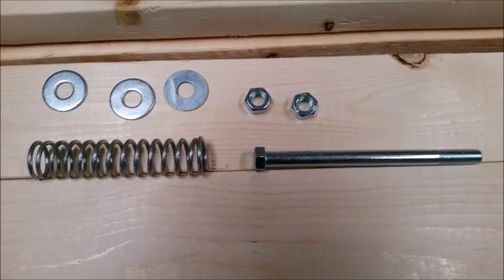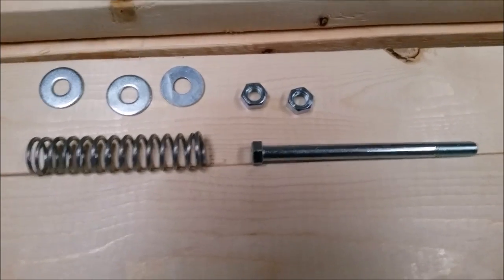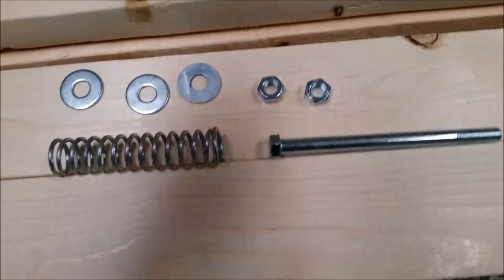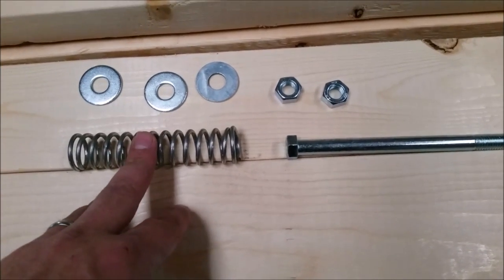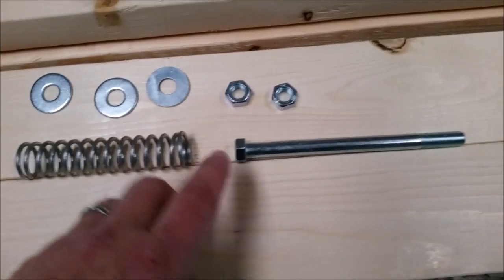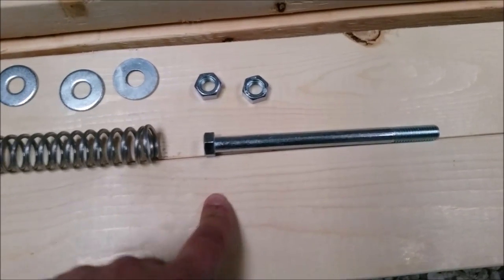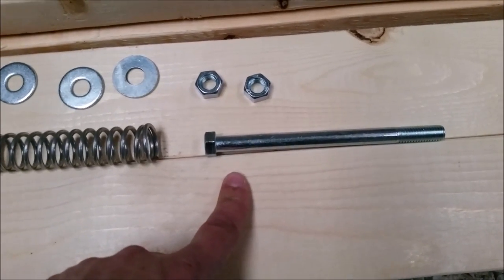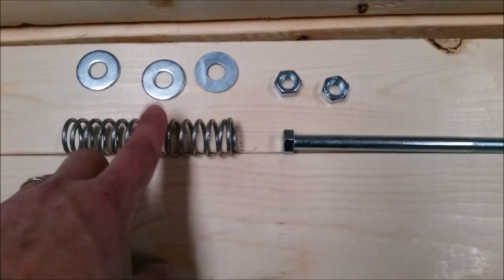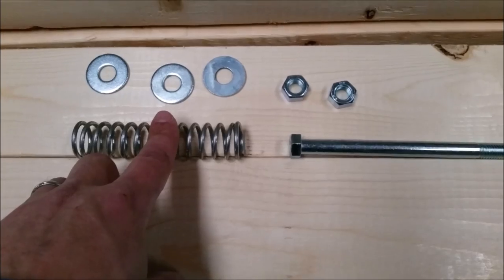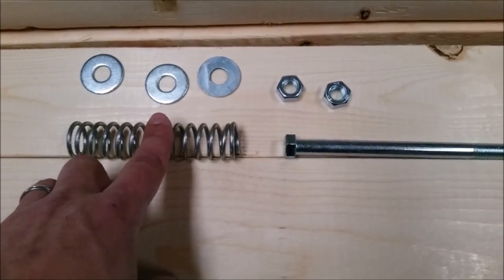For each one of these steel plates that we're going to mount, this is the hardware that you're going to need. You're going to need a 4.5-inch long by 1-inch in diameter compression spring. I've got a 6-inch long bolt which is a 7-16th diameter. I've got two 7-16ths nuts and three 7-16ths large washers or fender washers.